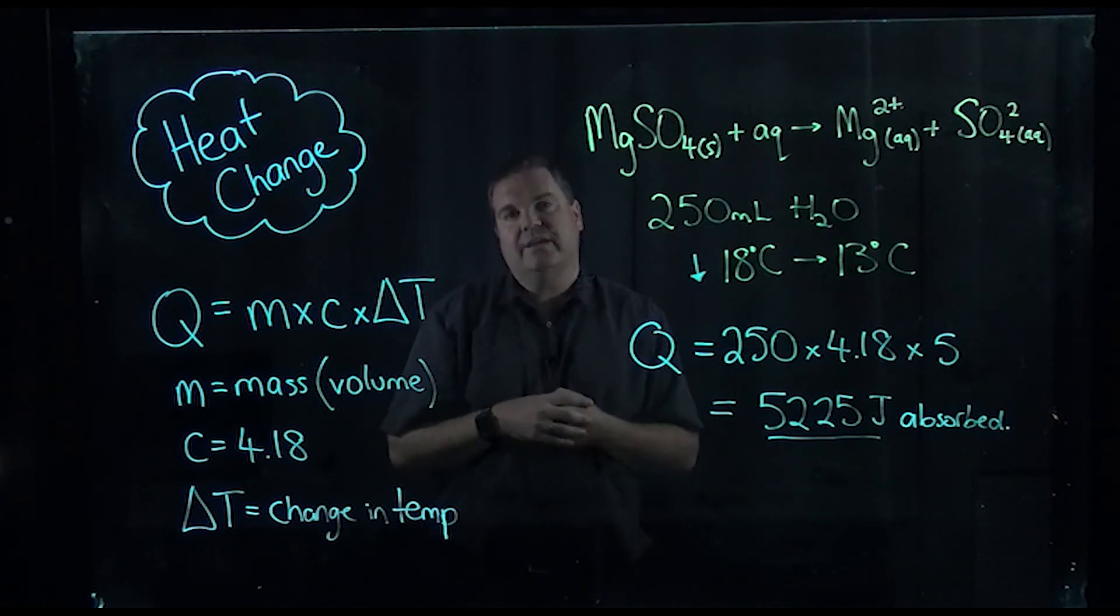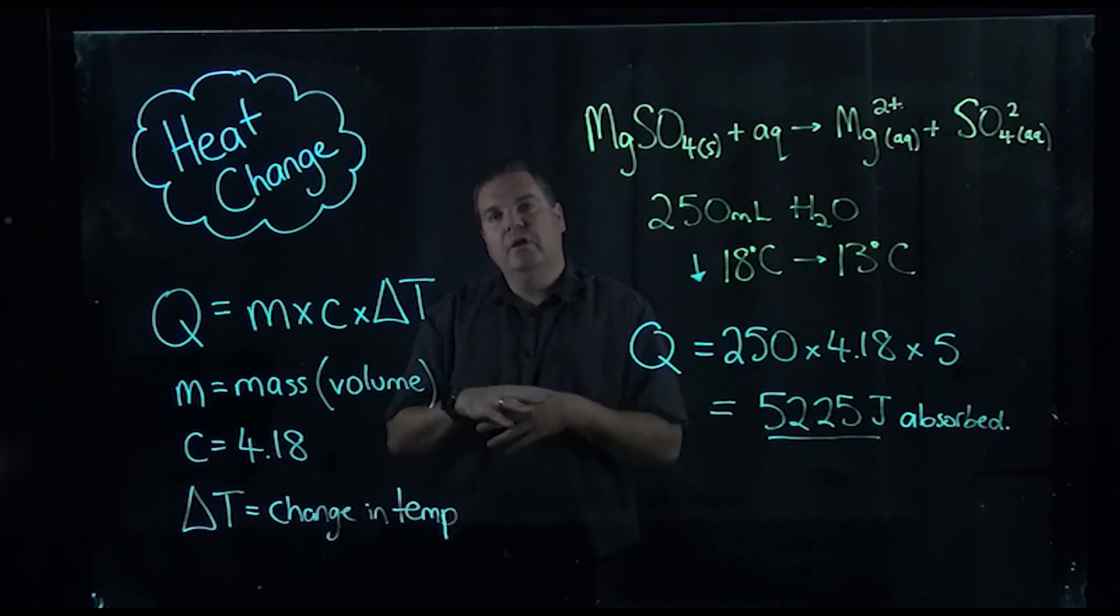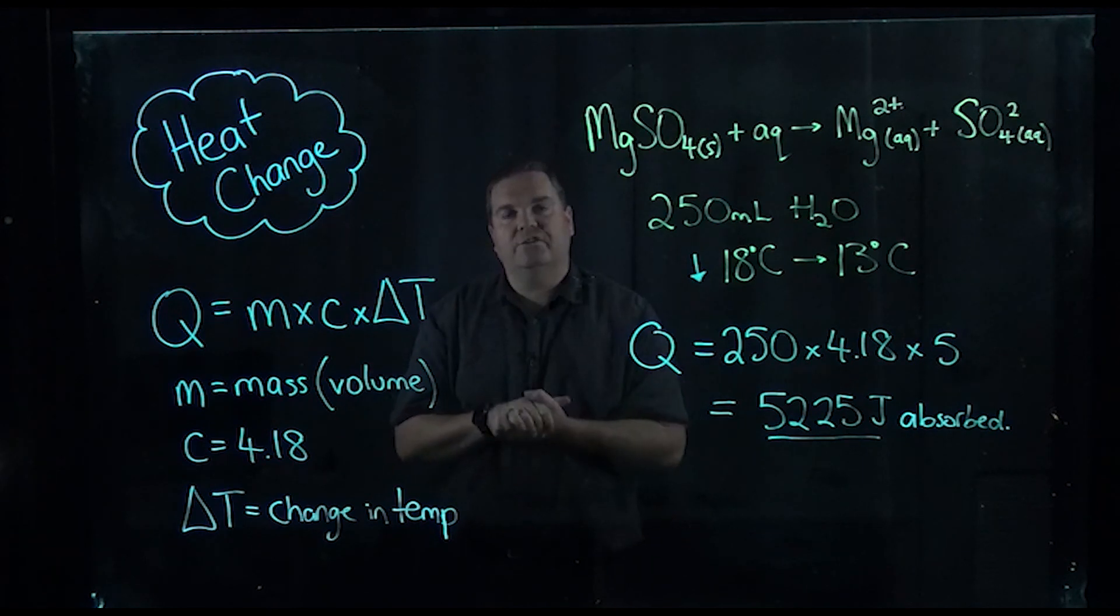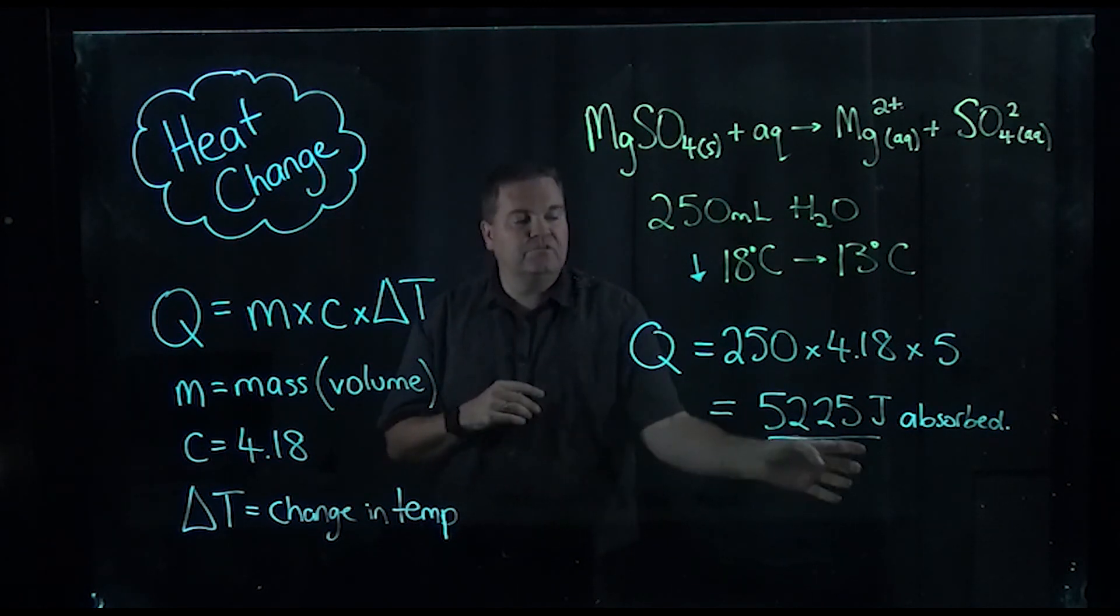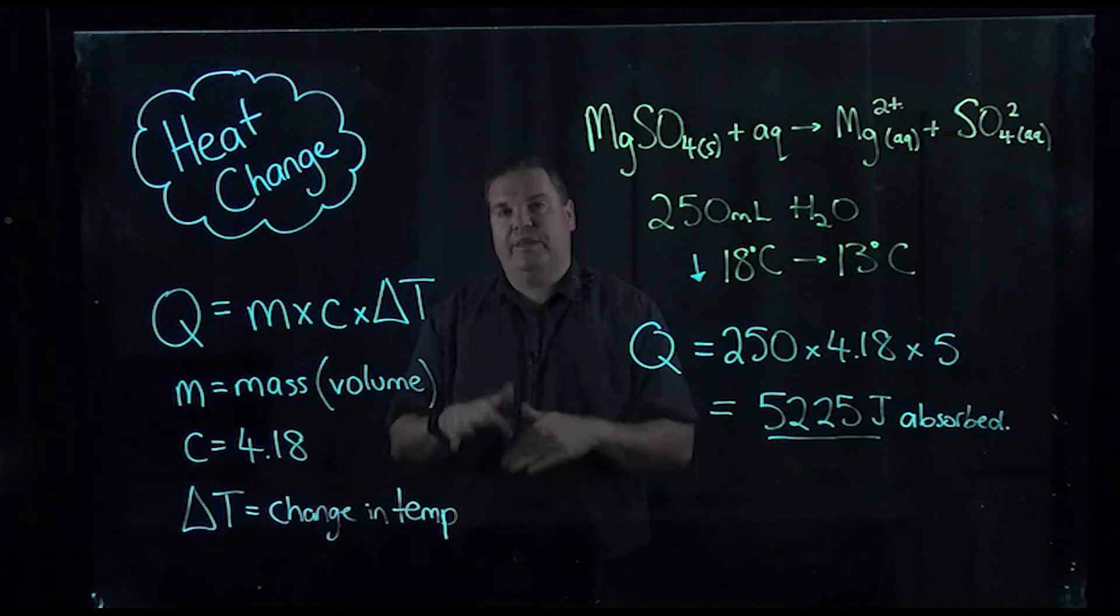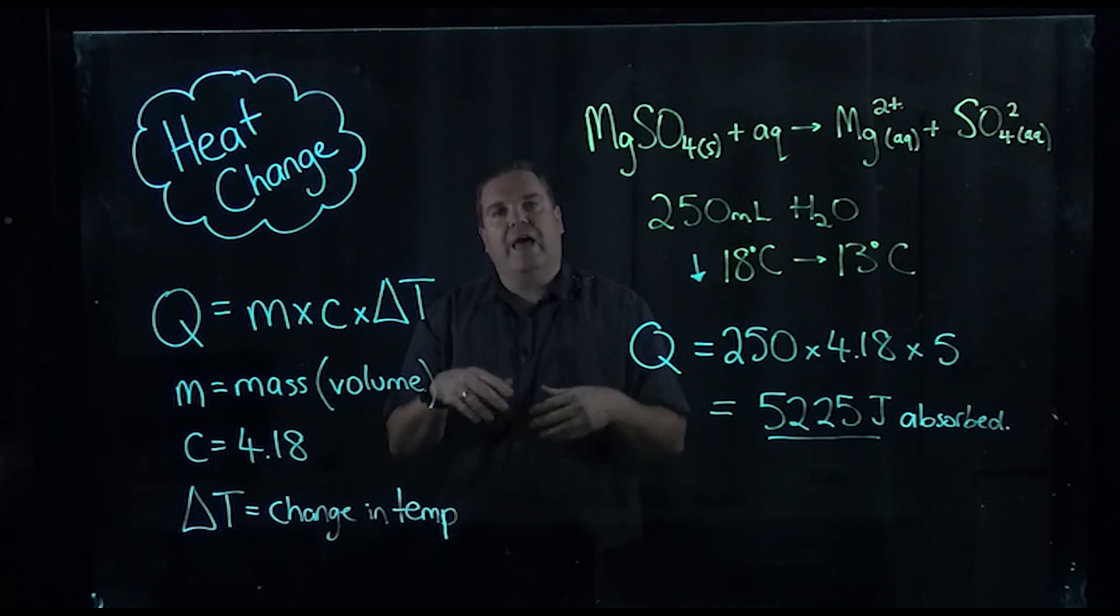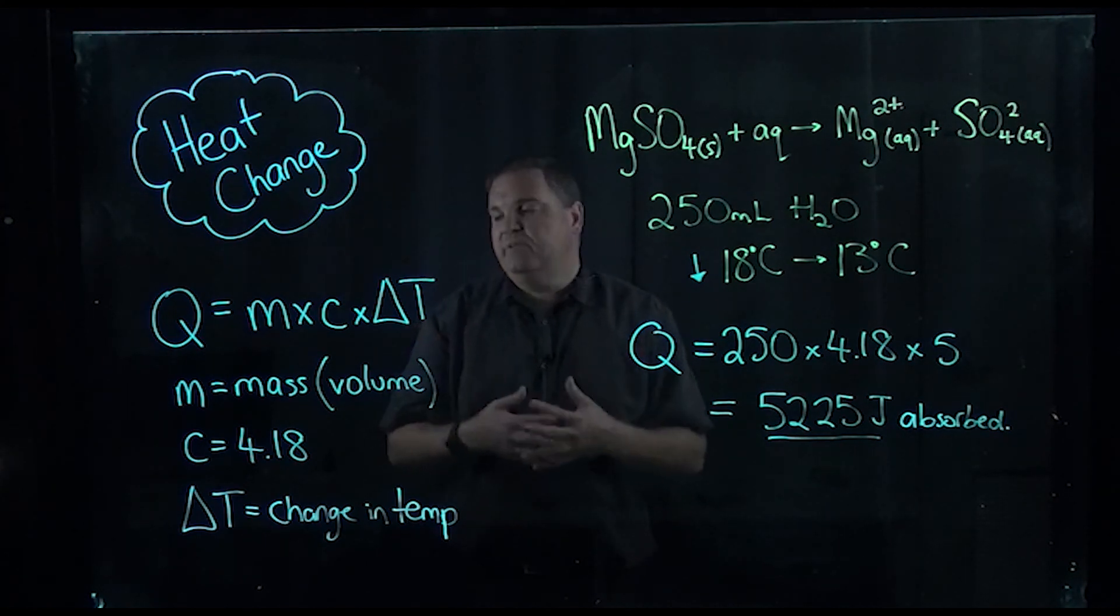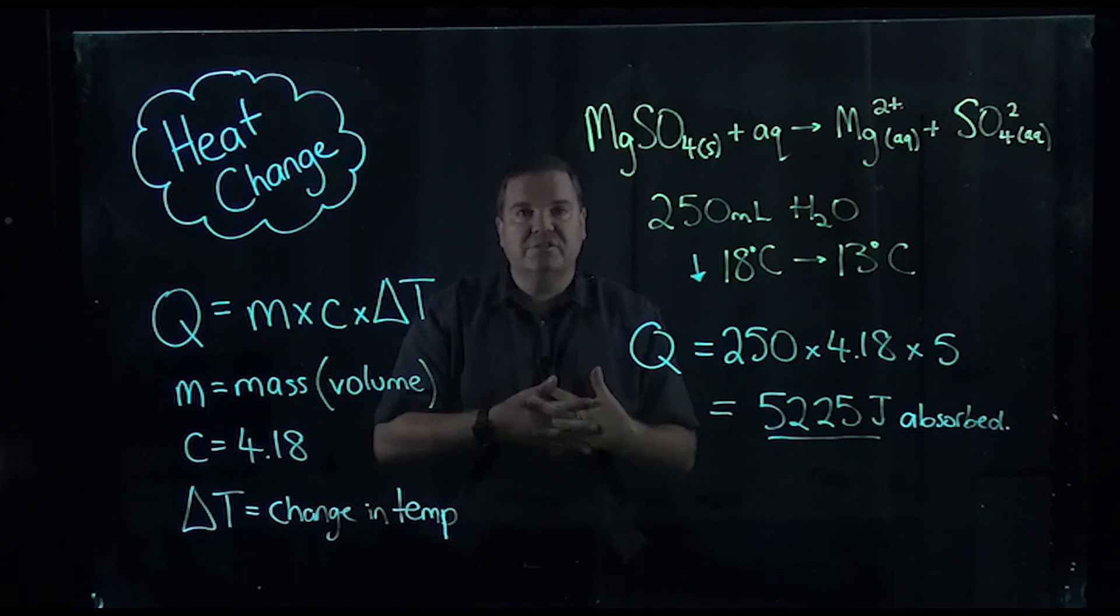So it's really good to use that because all you do is take this value, divide it by a thousand times the number of moles, and that actually gives you the delta H value. So it's really quite useful to have that as well. Hope this has been fairly straightforward. As always, if you've got any questions, just ask. Thanks guys.